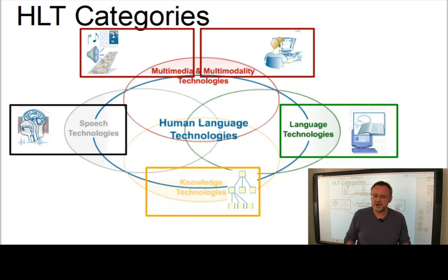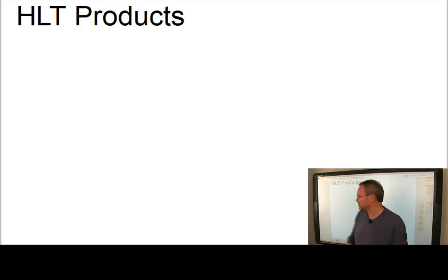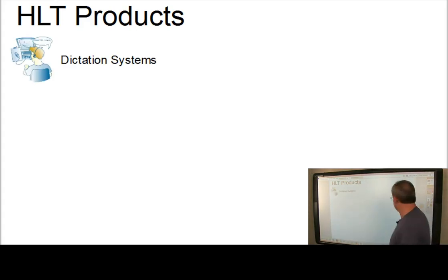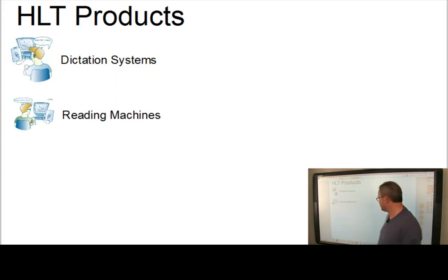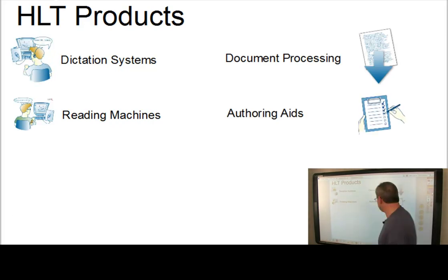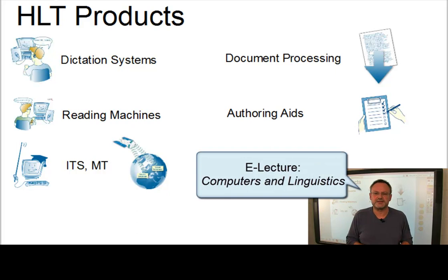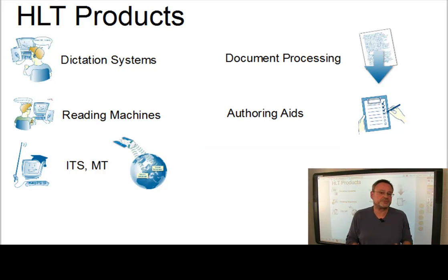Today, we find various marketable HLT applications associated with these areas. The common belief is that machines which are competent language users will be more useful to humans in a wide range of applications — for example, in dictation systems, in reading machines. We find authoring aids and document processing. And there are further applications such as intelligent tutoring systems or machine translation systems, which we already discussed in our eLecture Computers and Linguistics. While the systems developed for these tasks generally fall short of the human ideal, they are nonetheless useful in their small niches and they are constantly improving.